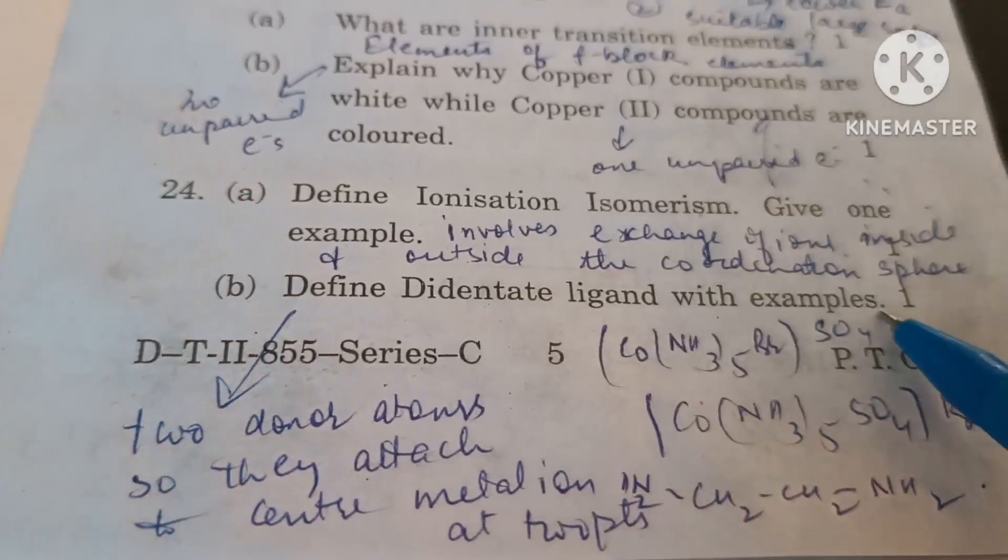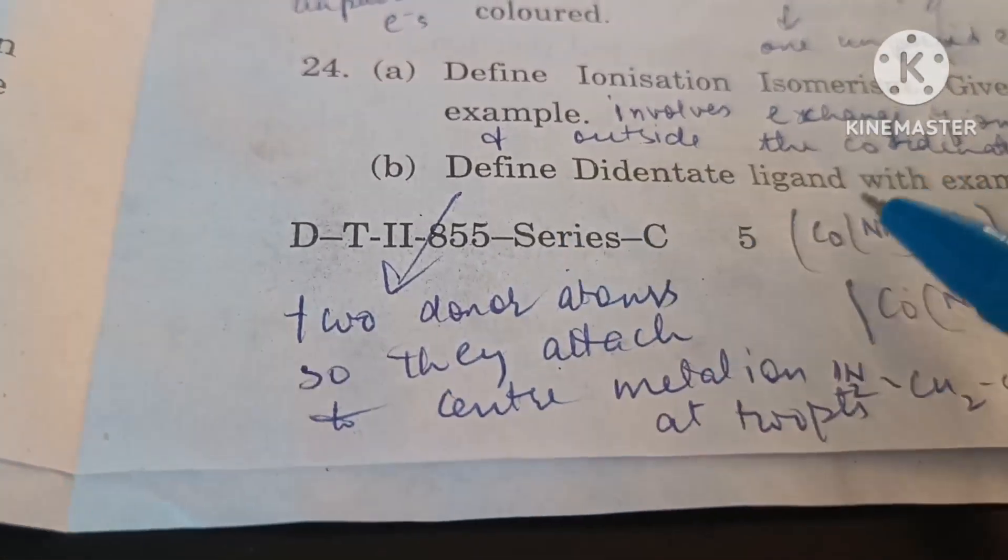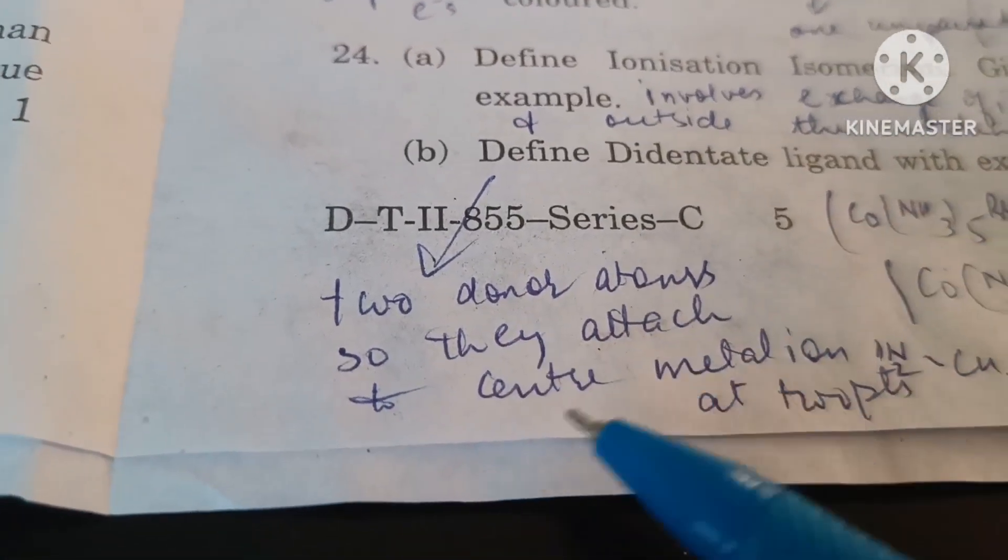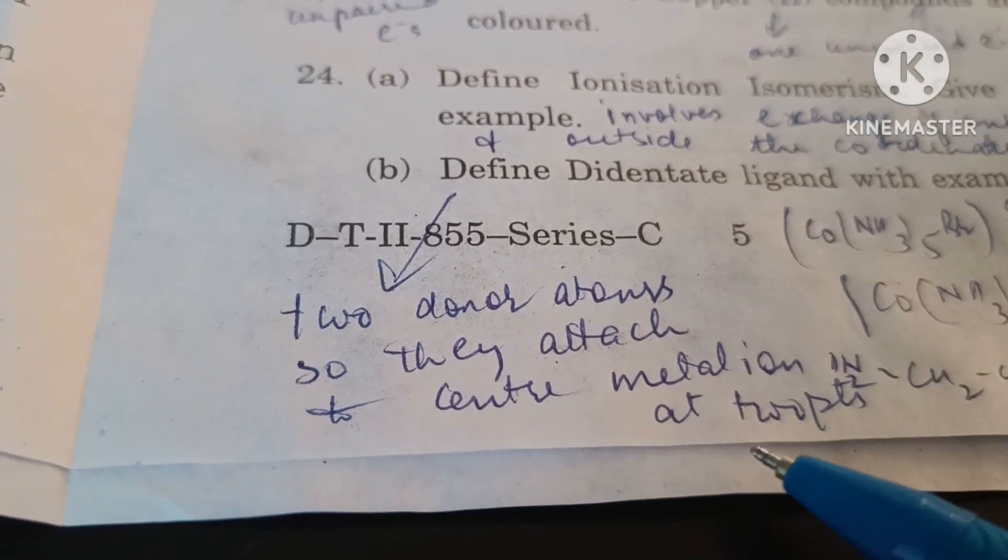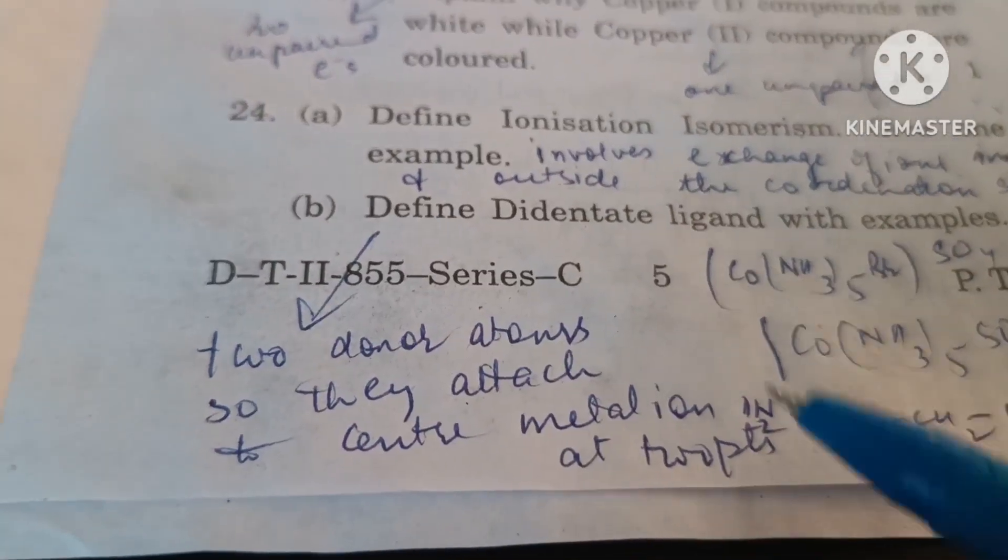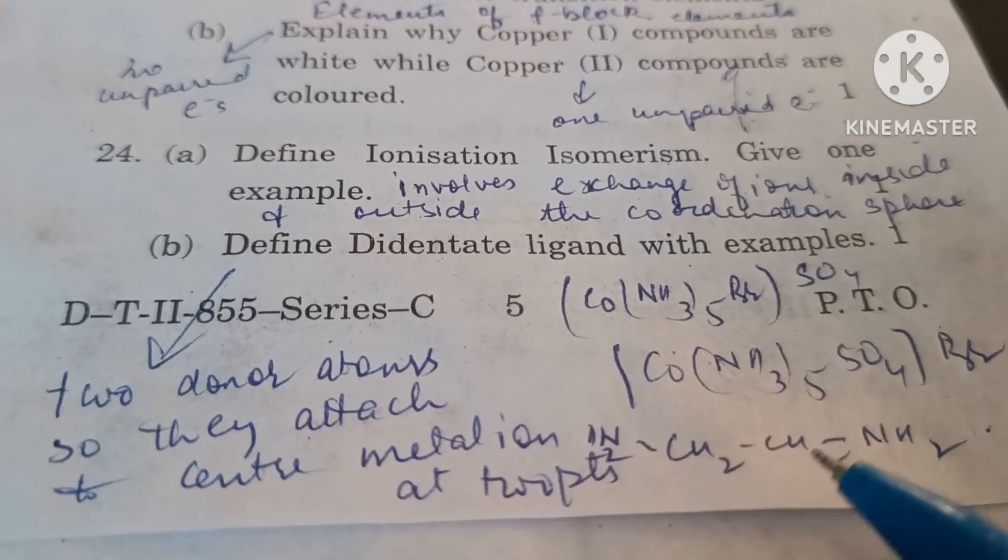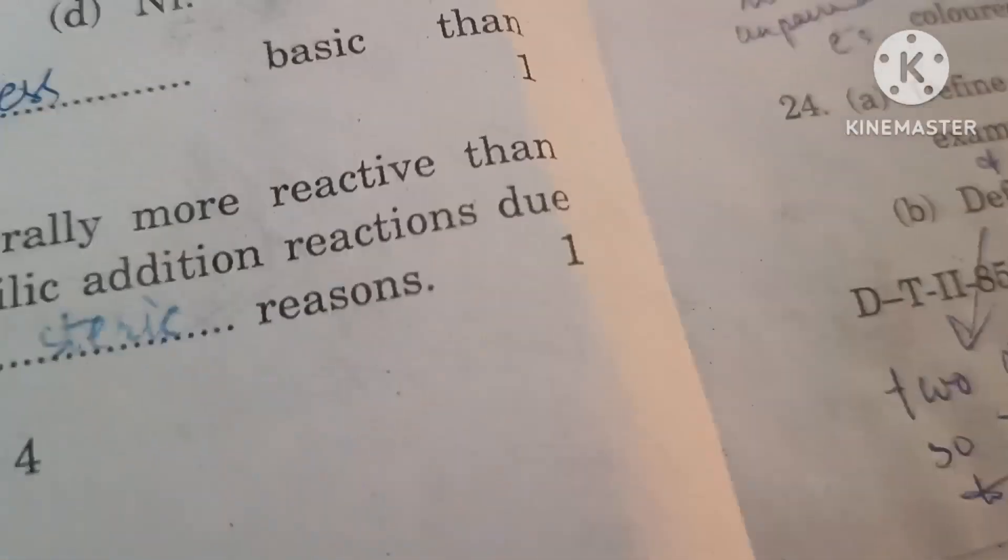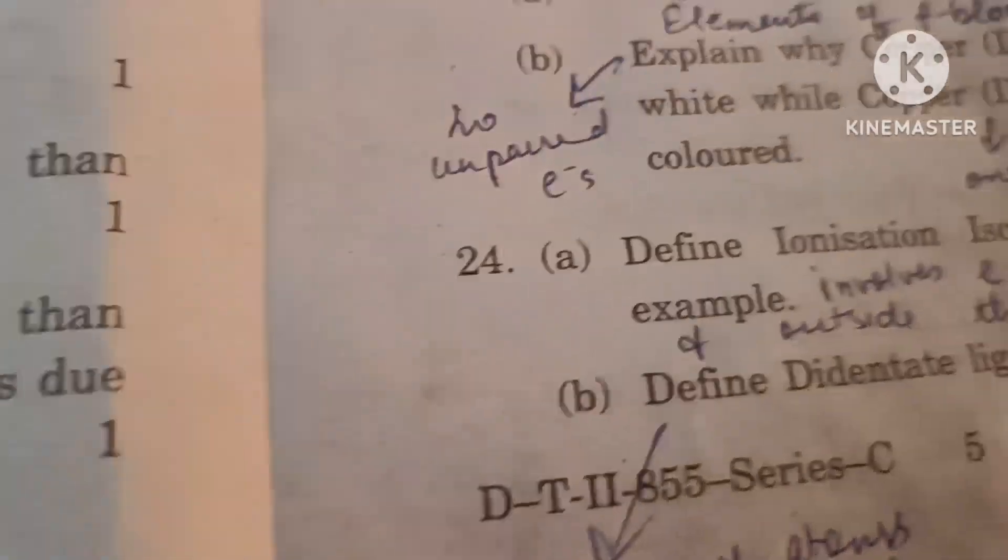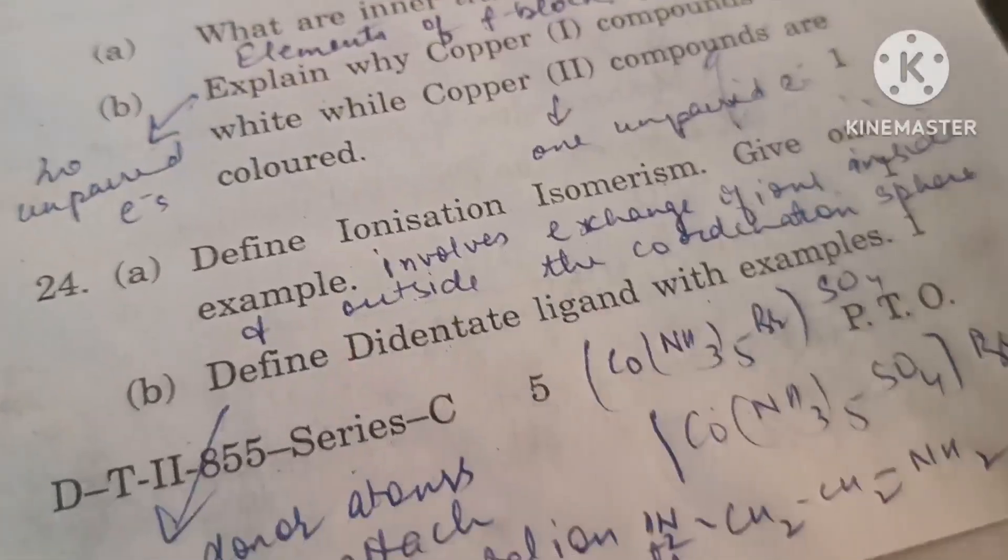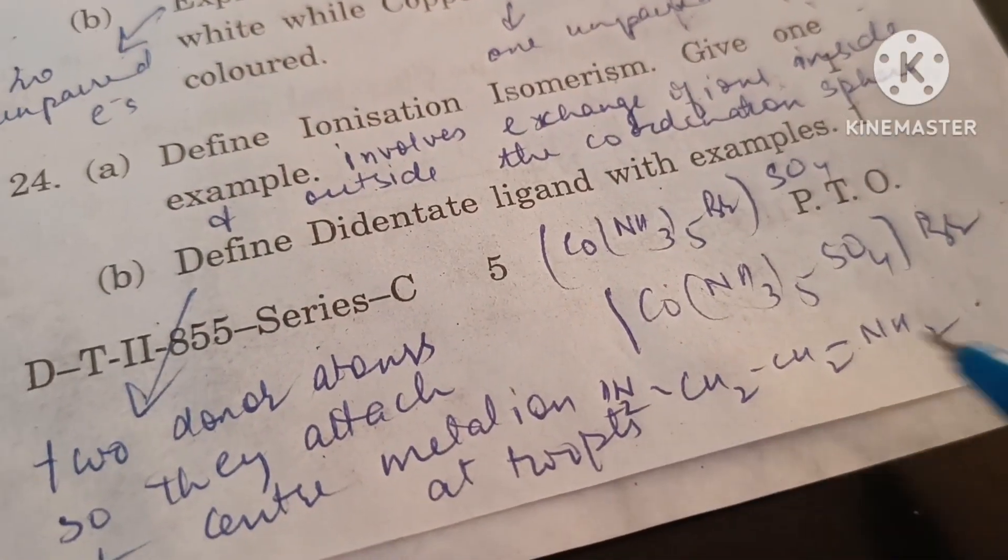Define bidentate ligand with example. A ligand with two donor atoms so that they can attach to central metal ion at two points is called a bidentate ligand. For example, ethane-1,2-diamine is a bidentate ligand. It attaches to the central metal atom through the two nitrogen atoms.